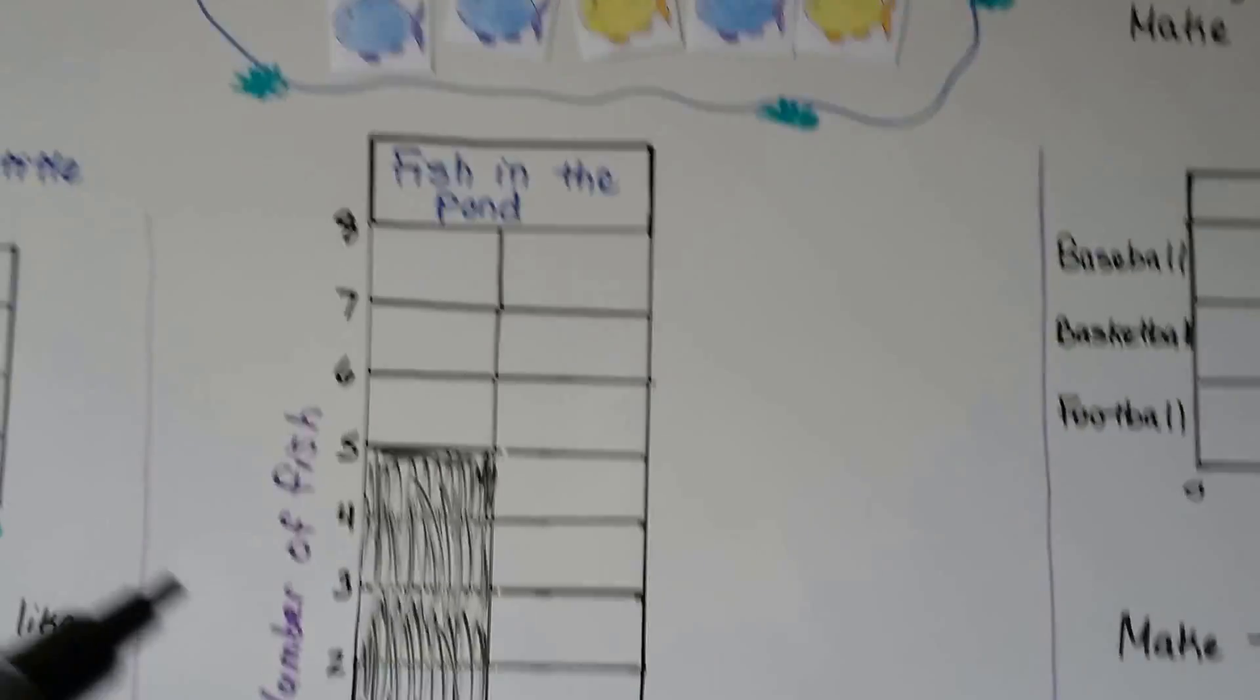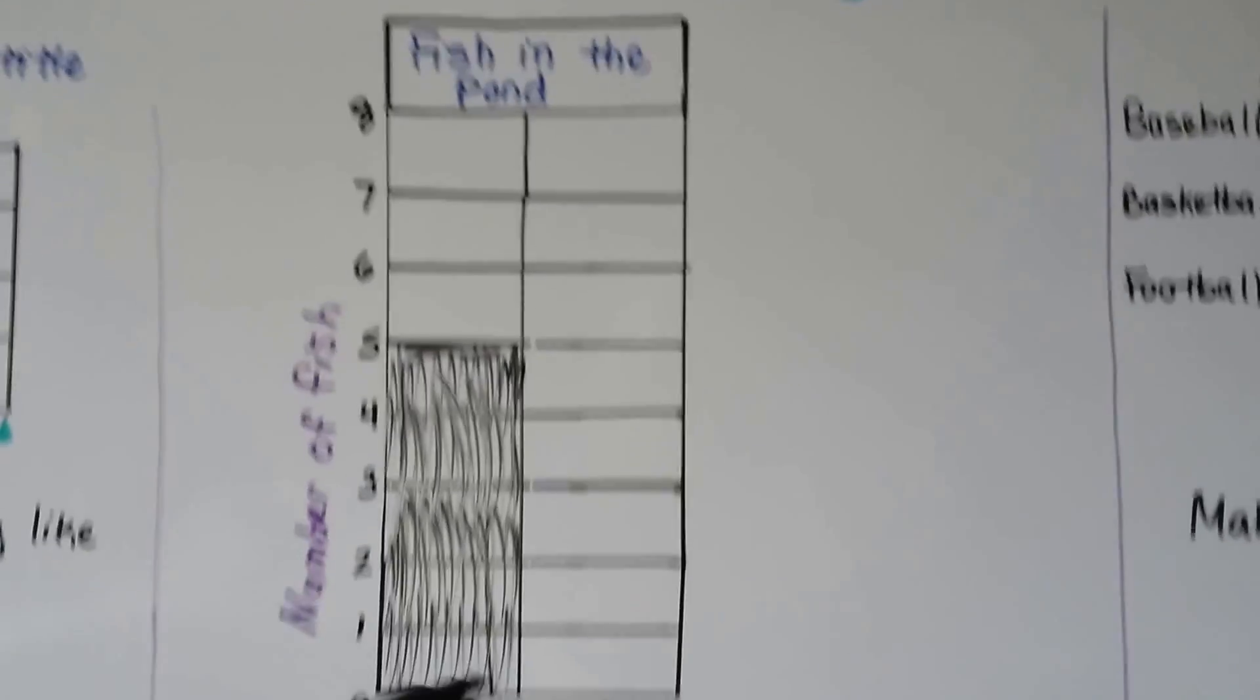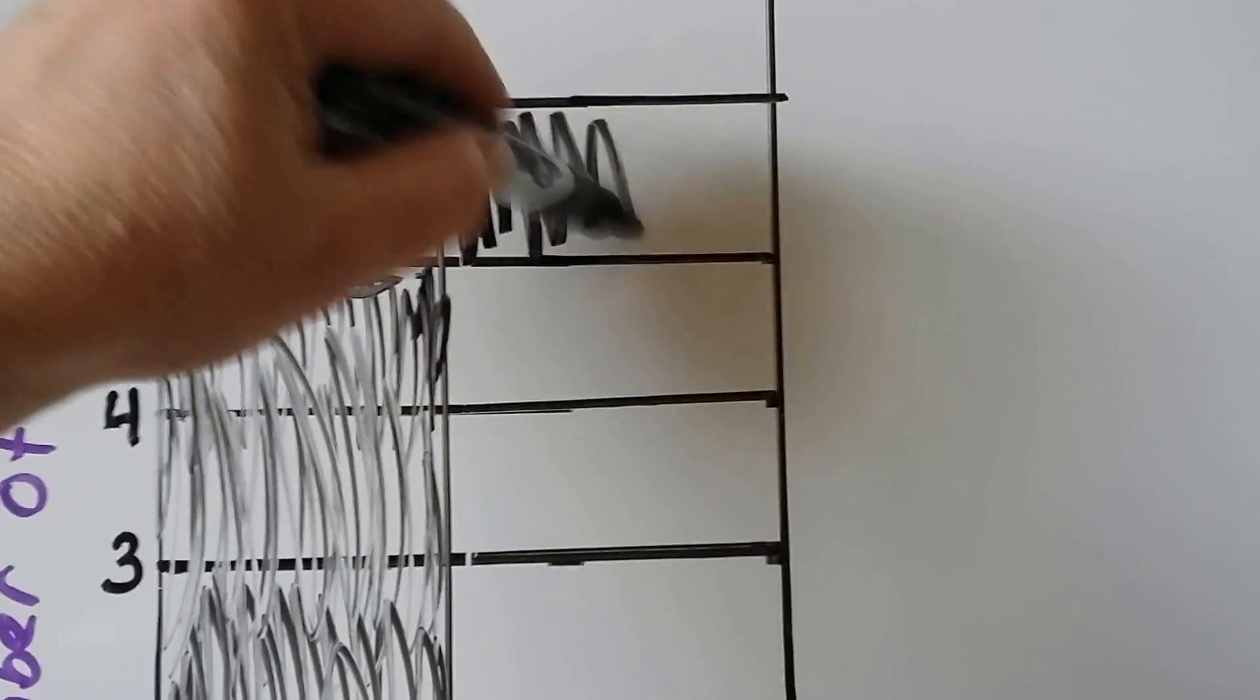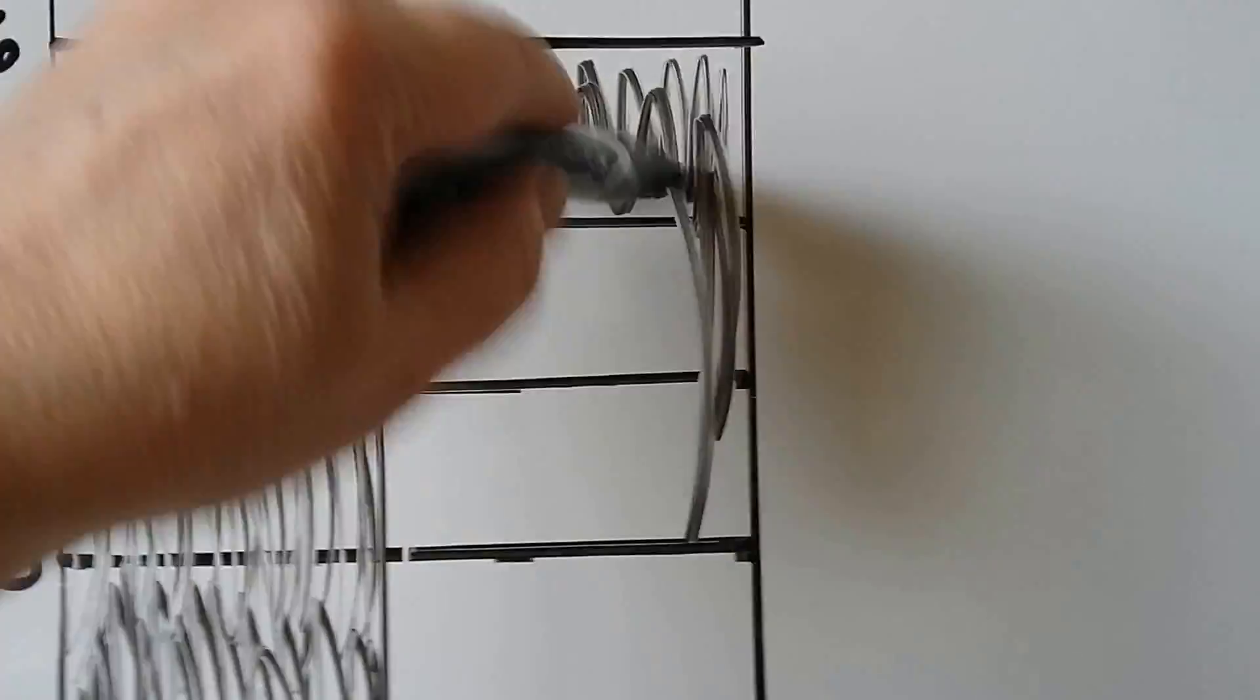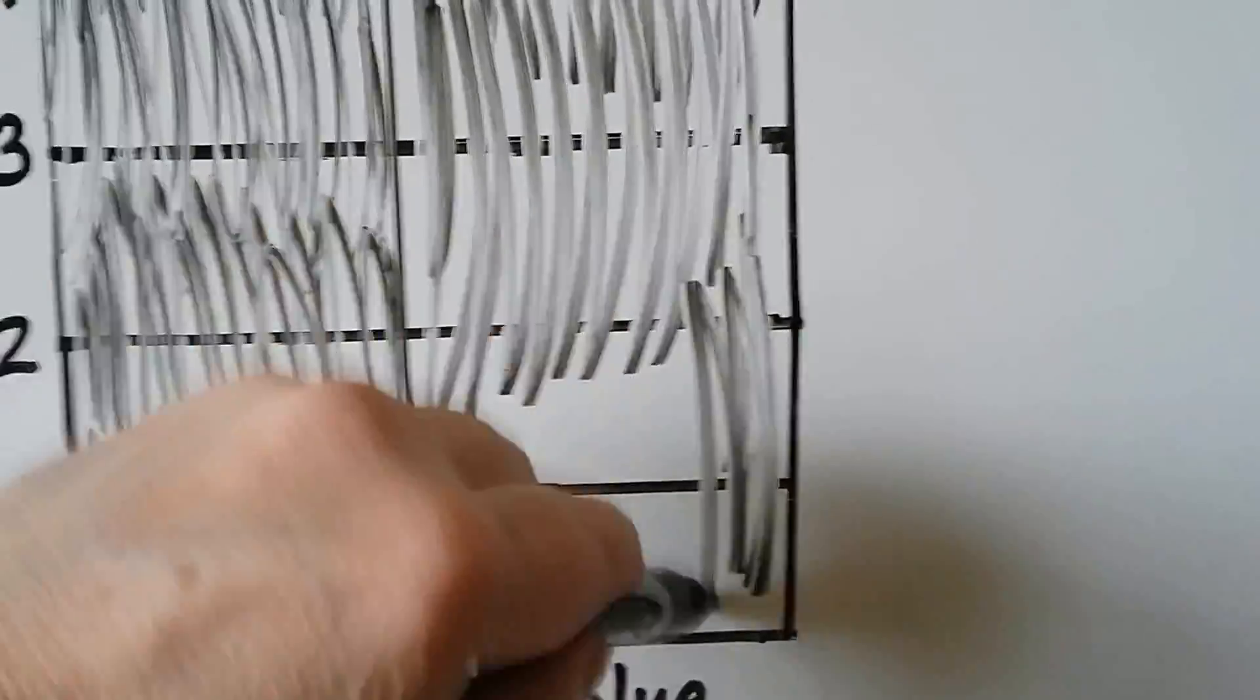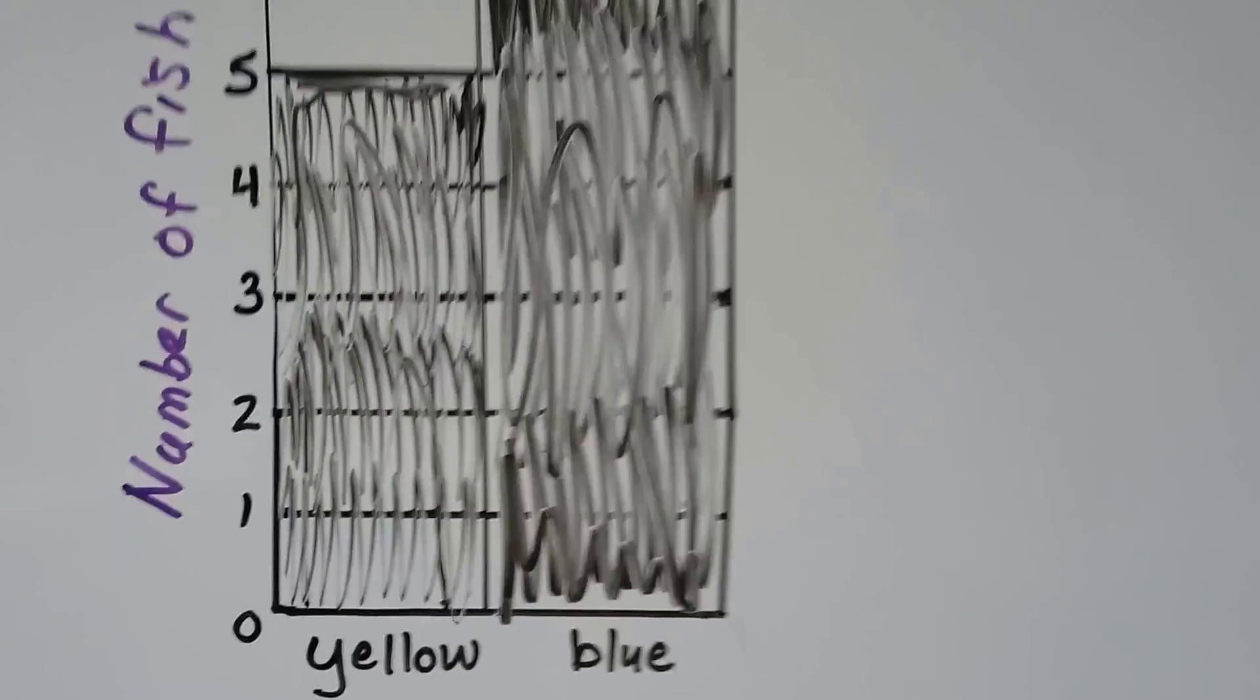Now, we need to count how many blue there are. Let's count the blue. One, two, three, four, five, six. So we're going to fill the blue in up to the six. That's the mark for six. So that's as high as it's going to go. And then the rest gets colored in. Not that pretty. But you know what I'm trying to do, right? I'm sure you could do a better job with crayons.